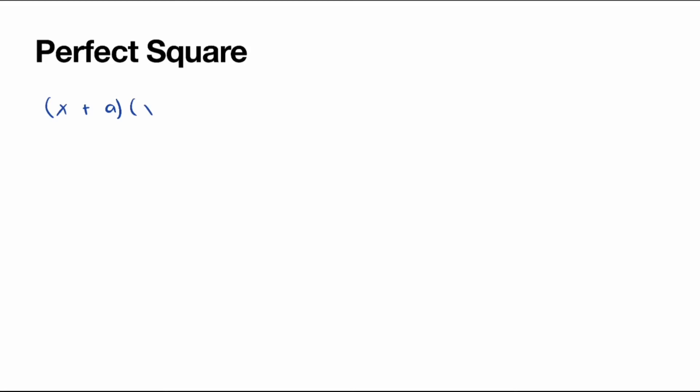In this video, I will be talking about perfect squares. So when we have a quadratic expression and we factorize, we will normally get two brackets: x plus a multiplied by x plus b, where a and b are numbers. However, if these two brackets are the same, then the quadratic expression is called a perfect square.